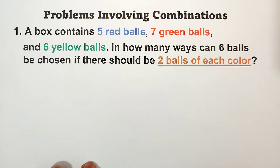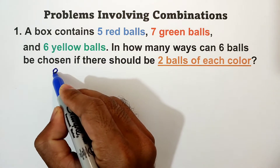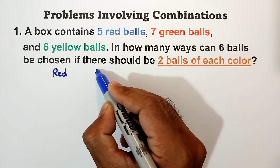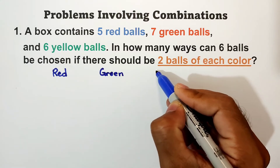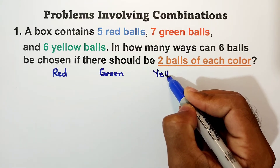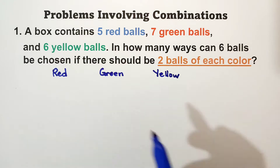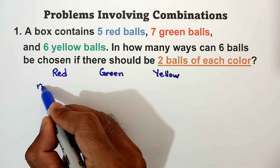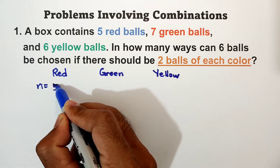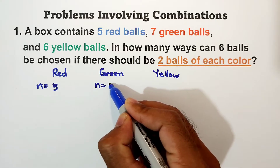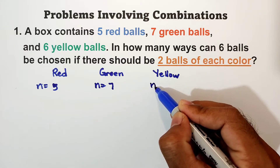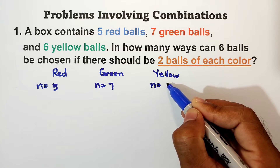Identify the value of n, or the number of items. We have red, green, and yellow. For red, n is equal to five. For green, n is equal to seven. For yellow, n is equal to six.